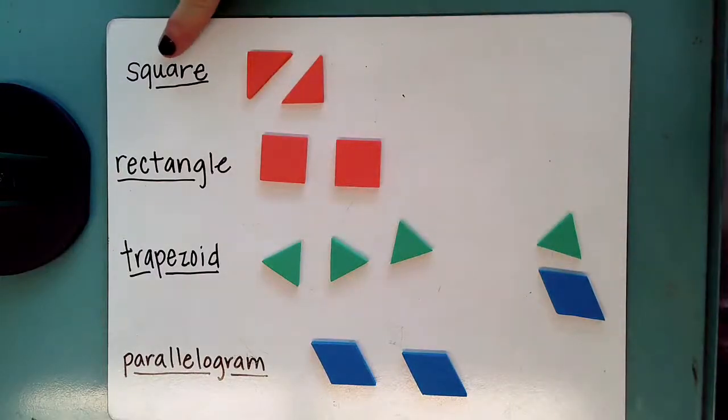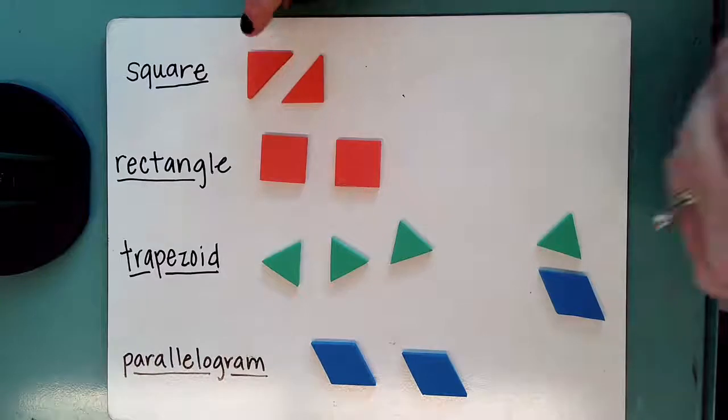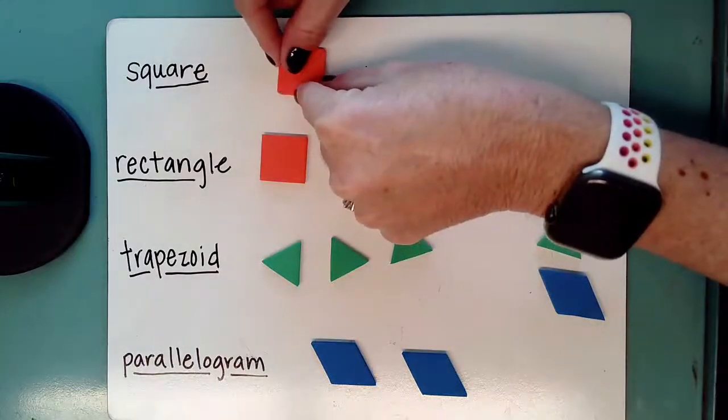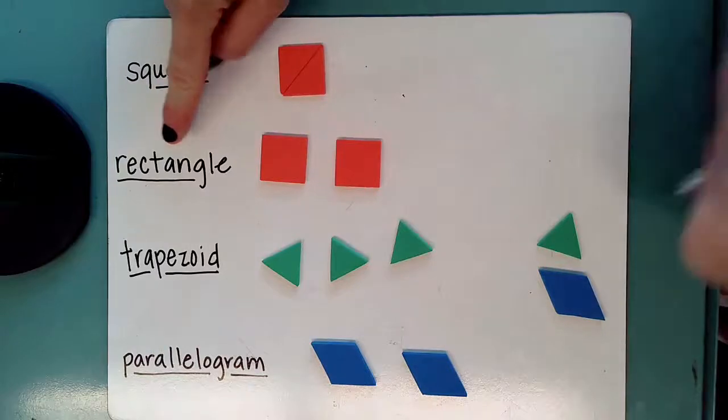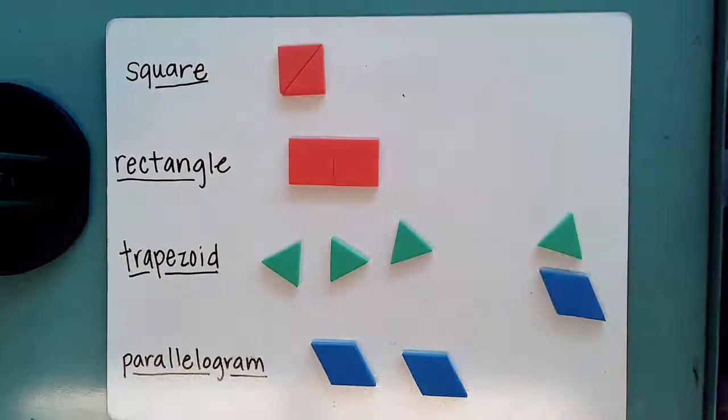Let's think about a square. One way we can make a square is we could put two triangles together. A rectangle can be created by putting two squares together.